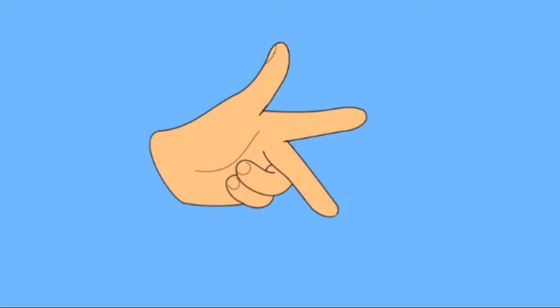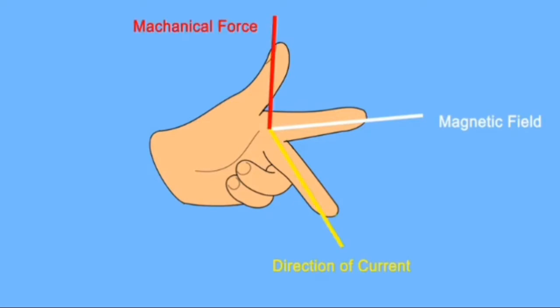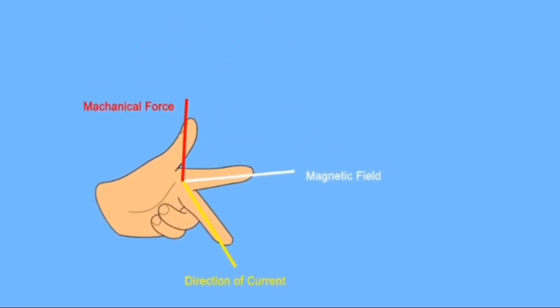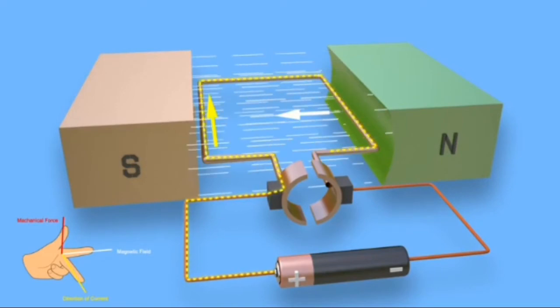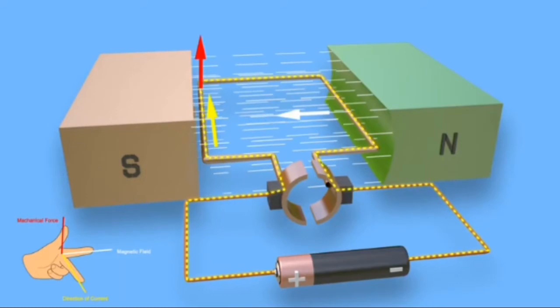To do this, spread out your left thumb, forefinger, and second finger, so they are all at 90 degrees to one another. So if forefinger is aligned in direction of magnetic field, that is from north pole to south pole, and second finger is aligned in direction of current in the left side conductor, then thumb indicates direction of mechanical force. This is clearly upward here.